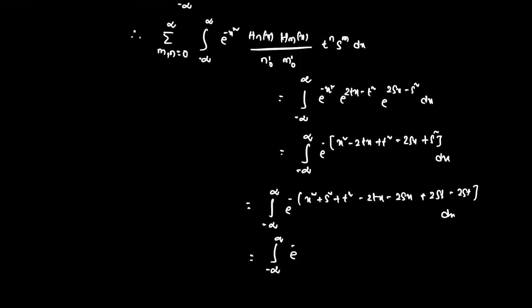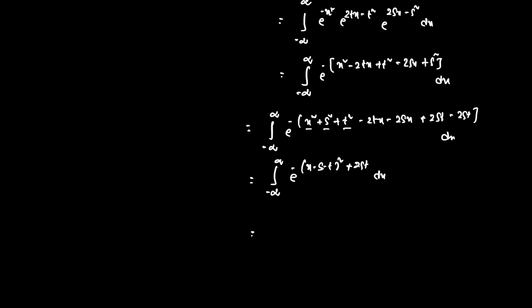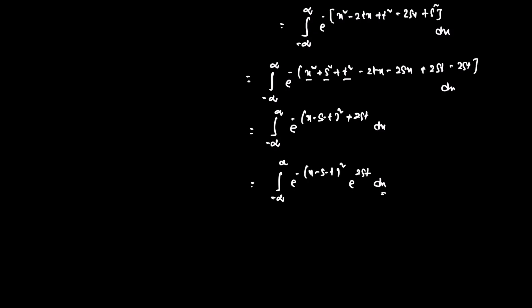We complete the square in x. The exponent becomes minus (x - s - t)² plus 2st. So the integral becomes: integral from minus infinity to infinity of e^(minus (x - s - t)²) · e^(2st) dx. Since e^(2st) is constant with respect to x, we pull it out: e^(2st) times the integral from minus infinity to infinity of e^(minus (x - s - t)²) dx.